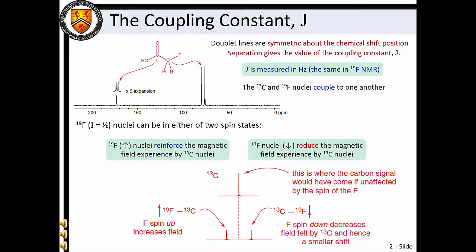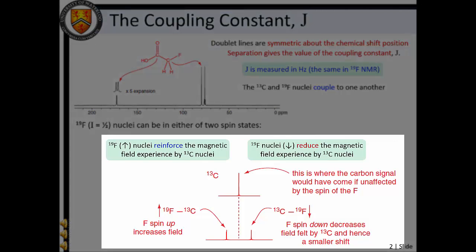The effective magnetic field experienced by a nucleus also depends on its local magnetic environment. If the nucleus of interest is adjacent to another nuclear magnetic moment, this adjacent magnetic environment can influence the effective magnetic field. For example, consider the proton-decoupled carbon-13 NMR spectrum of fluoroacetic acid. The I equals one-half fluorine nuclear magnetic moment can either be aligned with the applied magnetic field or against the applied magnetic field.